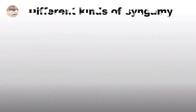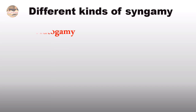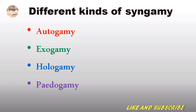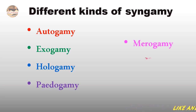Let us see the kinds of Syngamy. They are Autogamy, Exogamy, Hologamy, Pedogamy, Mirogamy, Isogamy, and Anisogamy.